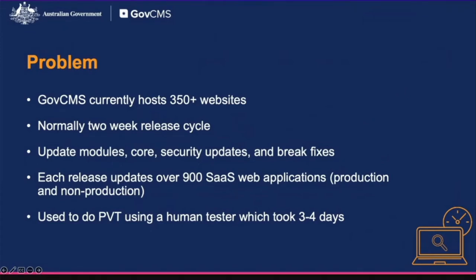We have roughly a two-week release cycle. During this release cycle, we update a range of things from new module requests, module updates, core updates, security updates, and bug fixes. During every release cycle, over 900 SaaS websites have to be updated — around 290 production websites and 580 non-production websites.